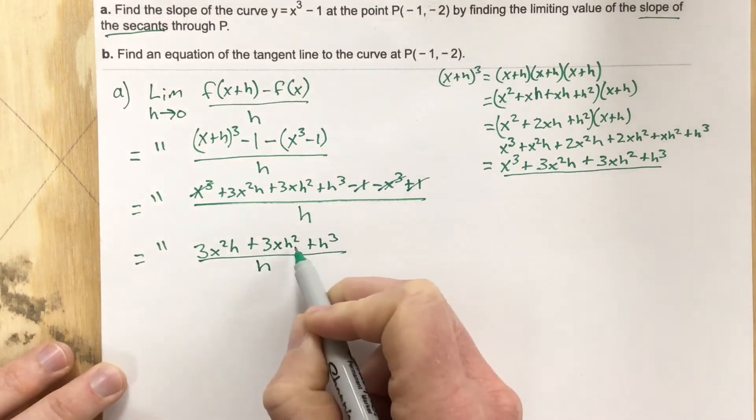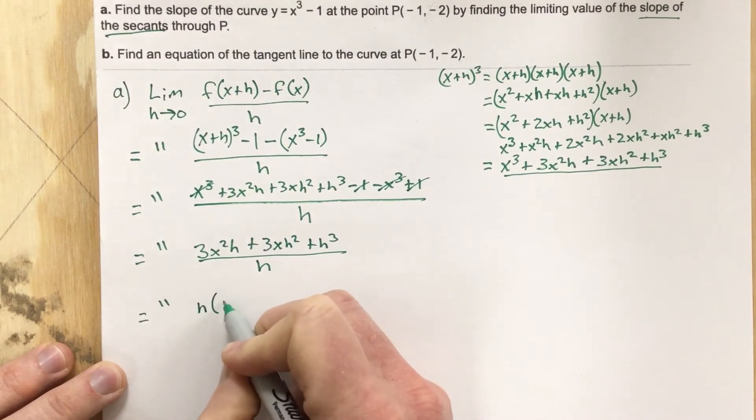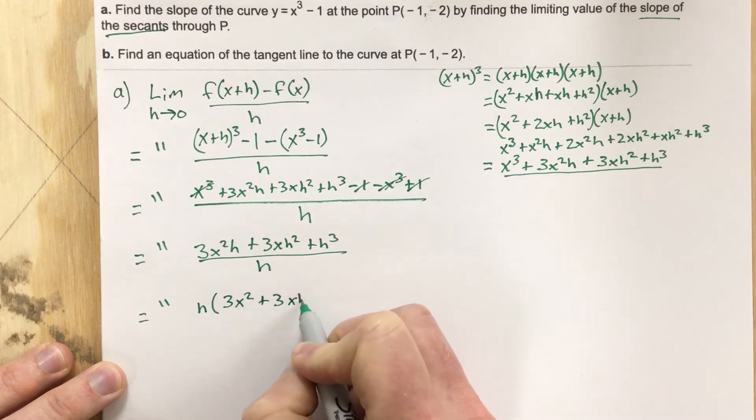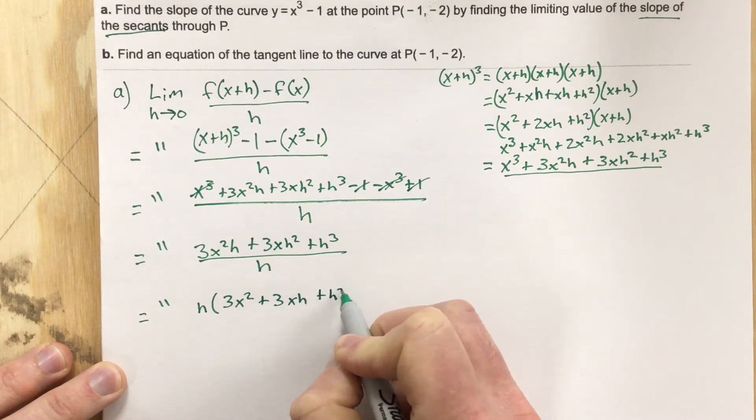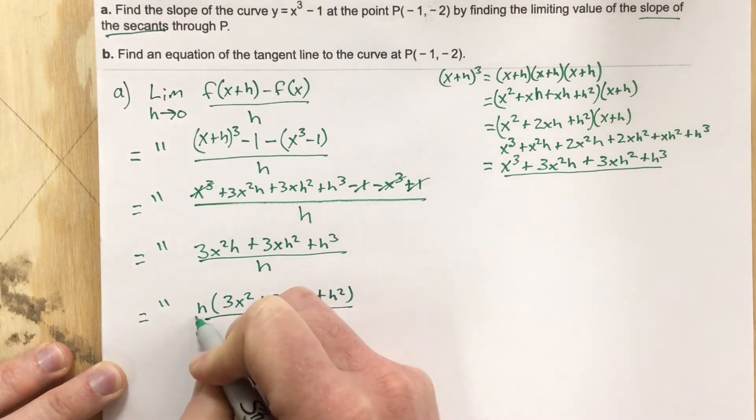Factor out an h from each term. H parenthesis 3x squared plus 3xh plus h squared all over h. We cancel the h.